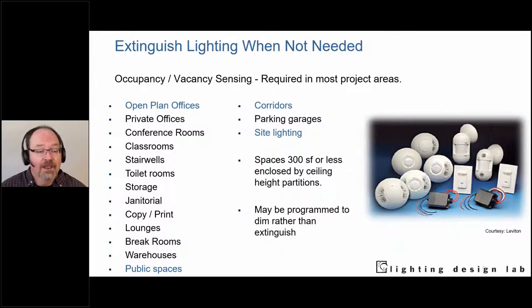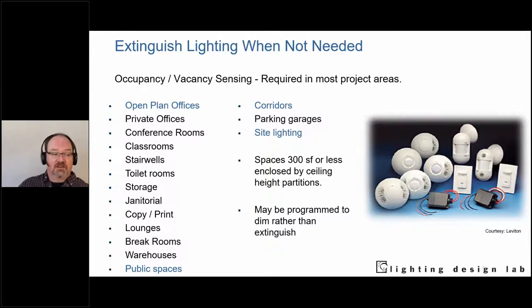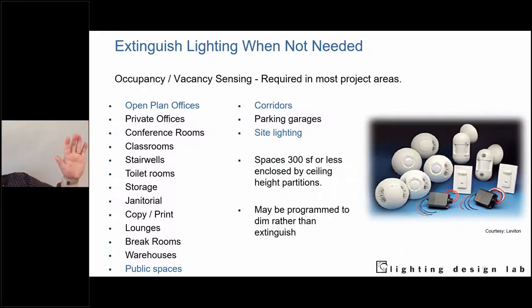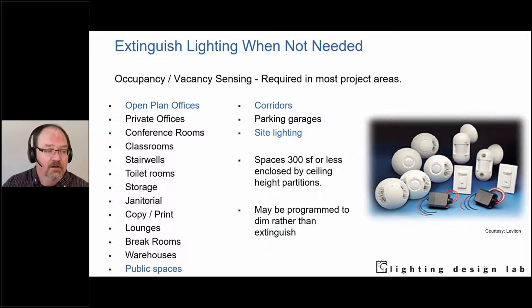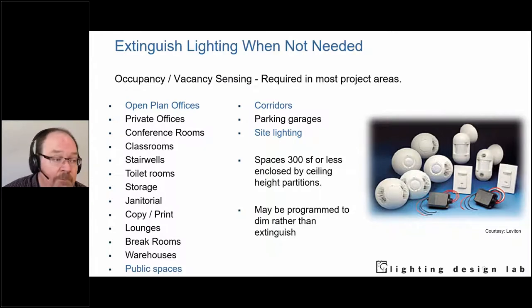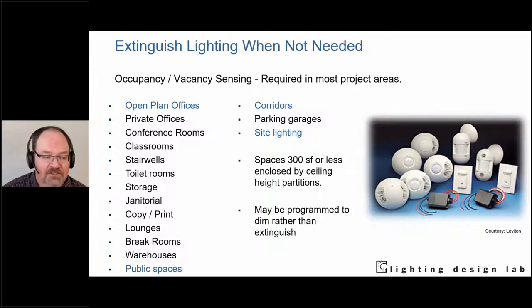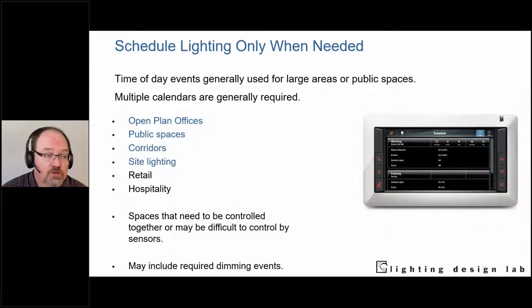The one place I'll tell you never to use lighting controls — an electrical or mechanical closet. If your hand is 10 inches from an energized bus bar, you don't want the lights going off. Use a toggle switch with a lockout there. Otherwise, use occupancy sensors and scheduling: schedule lights only when needed. Time-of-day scheduling is less common than it used to be — we've moved away from simple time clocks to using scheduling primarily for fine-tuning sensor behavior, except in lobbies, atria, or retail establishments.